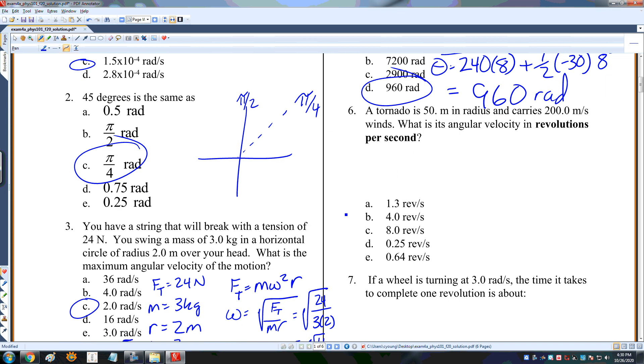Tornado is 50 meters in radius and carries 200 meters per second winds. What is this angular velocity? I need it in revolutions per second. I know that v equals omega times r, so omega equals v divided by r. So it's going to be 200 divided by 50 meters, which gives me 4 radians per second. But it's not revolutions per second, so I need to convert that to 2 pi radians over 1 revolution. 4 over 2 pi, that's 2 over pi, which is about 0.64. So number 6 is 0.64.